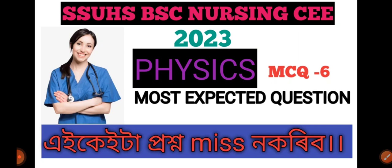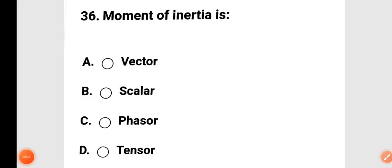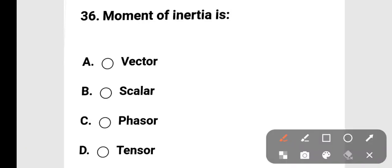The first question: if we have a series of times, we will discuss the moment of inertia. The moment of inertia — is it a vector, scalar, or tensor? The correct answer is option D: it is a tensor.